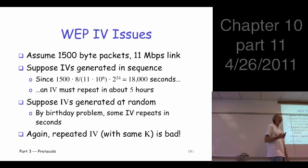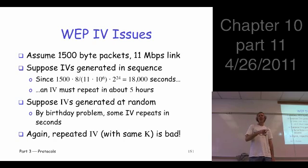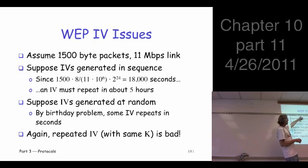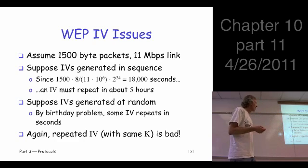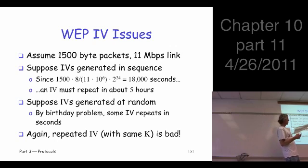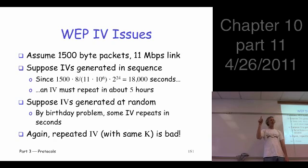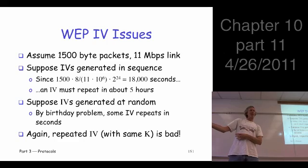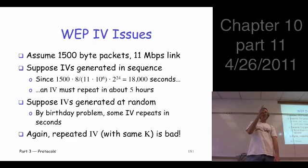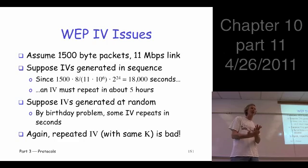You have a couple of choices: generate initialization vectors at random, which is the standard, or generate them in sequence and cycle through all 2^24 possibilities. Suppose we generate them in sequence. With packets of 1,500 bytes on an 11 megabit-per-second link, cycling through all 2^24 IVs takes about five hours. That's a while, but Trudy can collect packets, go have dinner, and come back — eventually she'll see a repeated IV and start attacks like those used on one-time pads.